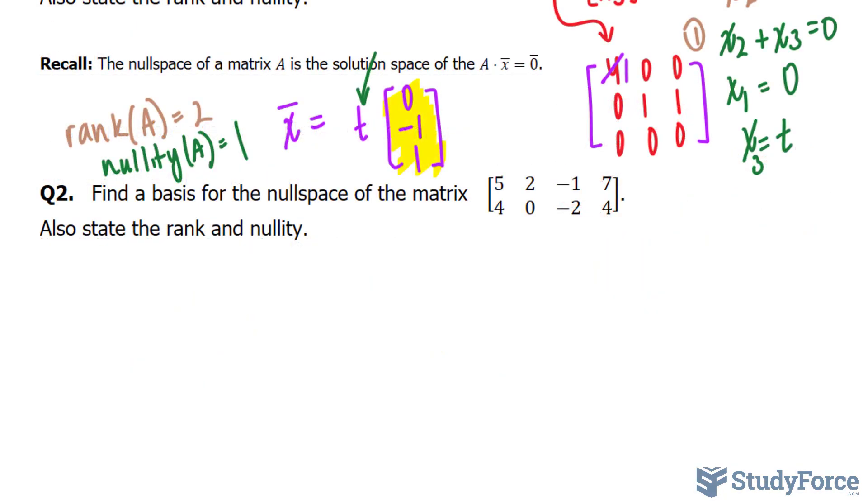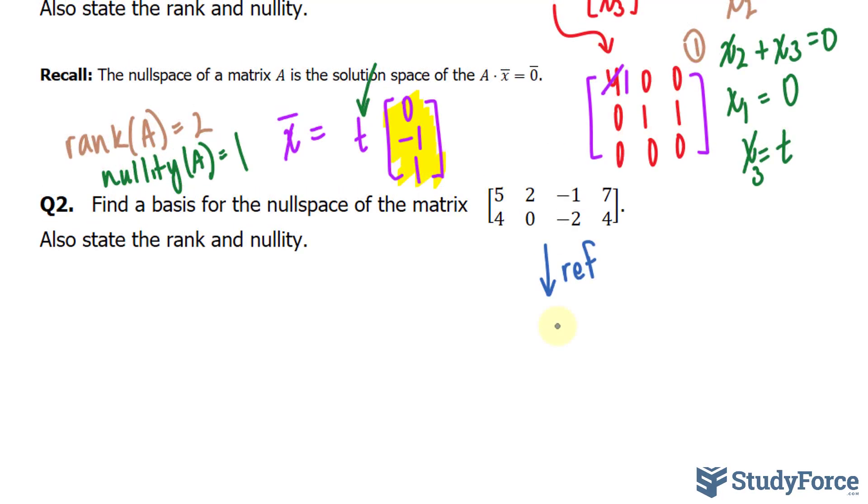In question two we're asked, find a basis for the null space of this matrix, and also state the rank and nullity. So we have to make this into row echelon form. Now I'm not going to go through the steps because it does take around three or four steps to do. I'm assuming you already know how to put a matrix in row echelon form. You can even use a calculator if you like. If you do it correctly, it should look like this.